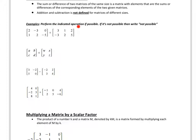The directions say perform the indicated operation if possible. If it's not possible, then just write not possible. So we're going to take the first element and add it with its corresponding first element. 2 plus 3 is 5, so the first element of the sum is 5. Then negative 3 plus 1 is negative 2. Then 0 plus 2 is 2. Then 1 plus negative 3 is negative 2. Then 2 plus 2 is 4. Negative 5 plus 5 is 0. So that's the sum.